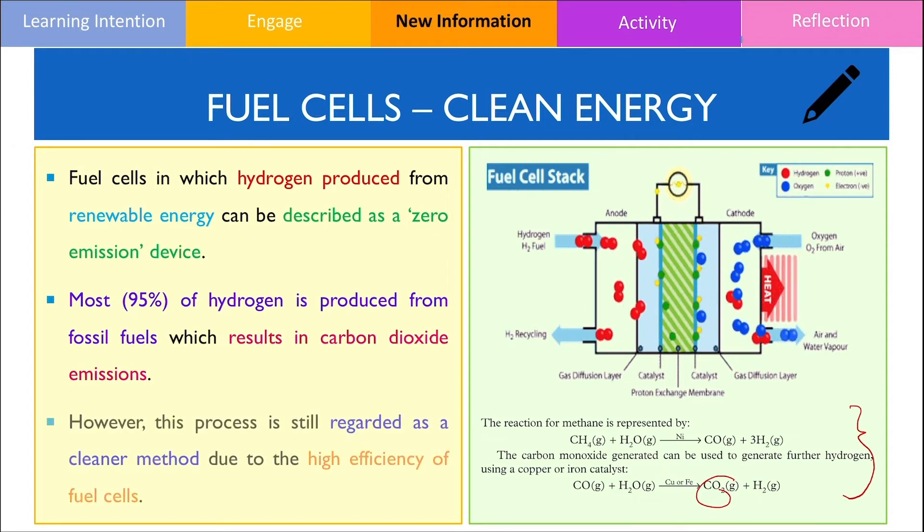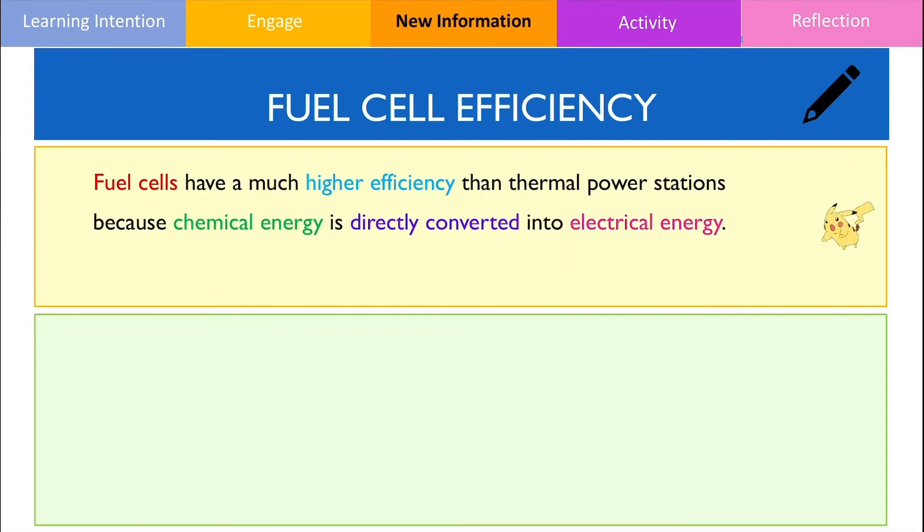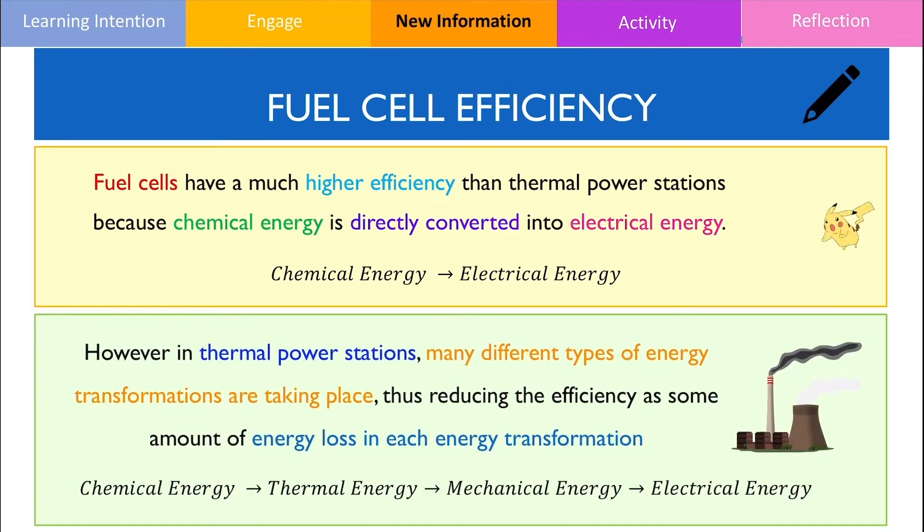However, this process is still regarded as a cleaner method overall compared to combustion engines and thermal power plants due to the higher efficiency. What makes the fuel cell more efficient compared to thermal power plant stations is because the chemical energy is directly converted into electrical energy, hence there's only one energy transformation taking place. In contrast, many different types of energy transformations are taking place in order to produce electricity in a power plant, thus reducing their efficiency as a small amount of energy is lost when energy transitions from one form to the next.